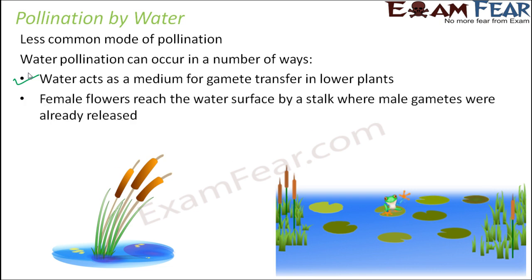In some other plants, the female flowers reach the surface of water by a stalk where the male gametes are already released. The male gametes are released on the water surface, but female flowers are deep inside the water, so they reach the surface with the help of a stalk and meet the male gametes — that is where fusion takes place. One such example is the aquatic plant Vallisneria.